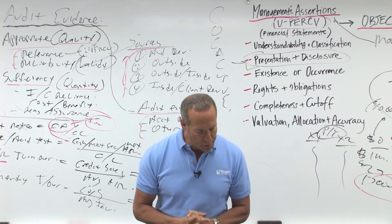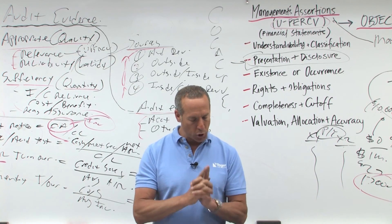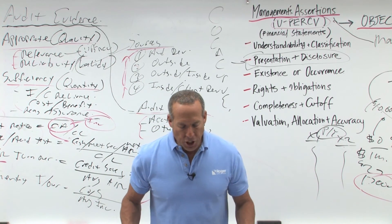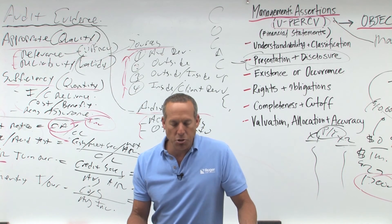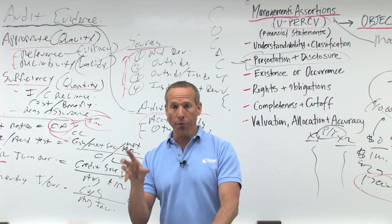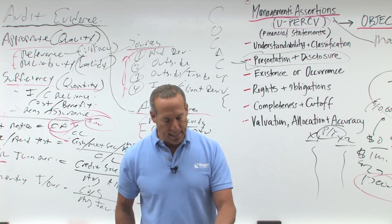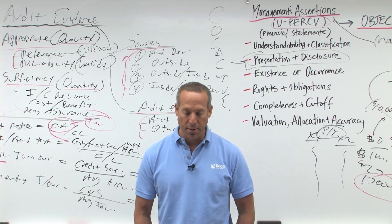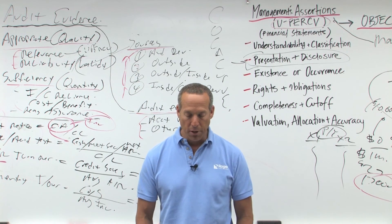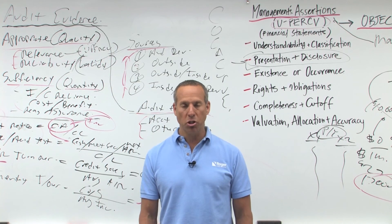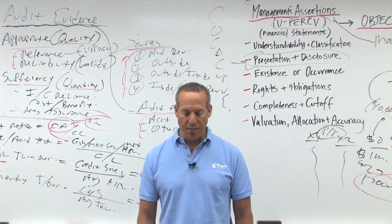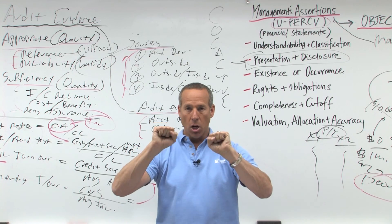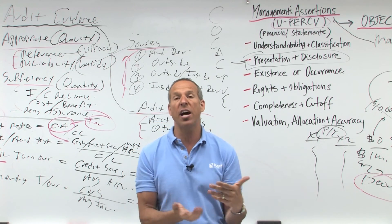Price-earnings ratio — market price over EPS — measures the ratio of market price per share to earnings per share. Payout ratio measures the percentage of earnings distributed in the form of dividends. Debt to equity shows creditors the corporation's ability to sustain losses, as it's total debt over stockholder's equity. Debt to total assets measures the percentage of total assets provided by creditors. Times interest earned measures the ability to meet interest payments as they come due. Cash debt coverage measures the ability to repay total liabilities. Book value per share measures the amount each share would receive if the company were liquidated at the amounts reported on the balance sheet — essentially common stockholder's equity over common shares outstanding.